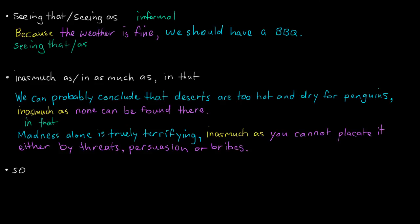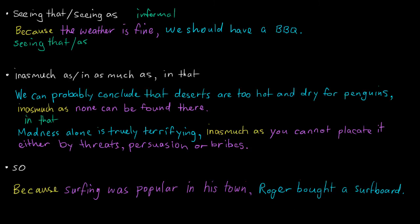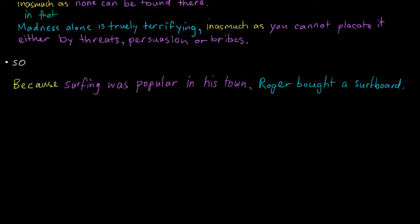Now we're going to look at 'so'. Here, 'so' can function a little bit like because, but I think what you'll find is it complicates things. If we use because, we have this sentence: Because surfing was popular in his town, Roger bought a surfboard. Now if we tried to use 'so', it would get quite confusing in that we would have to reverse the importance of the clauses. So: Surfing was popular in his town, so Roger bought a surfboard.